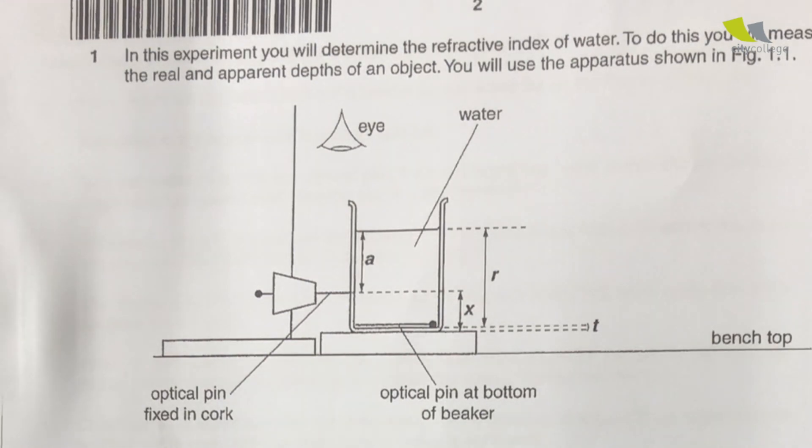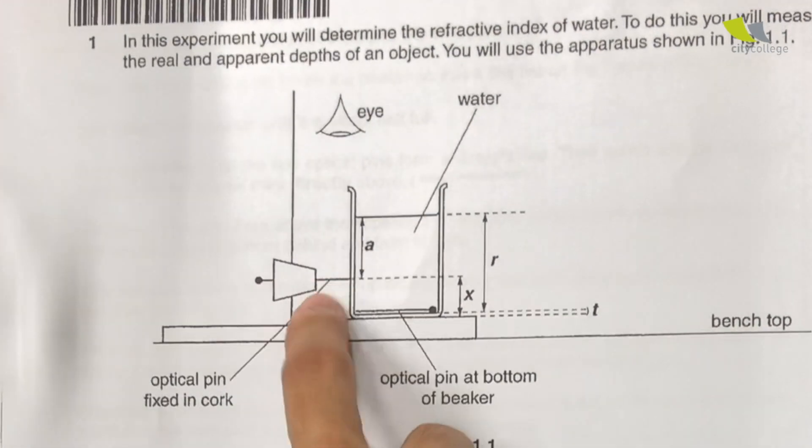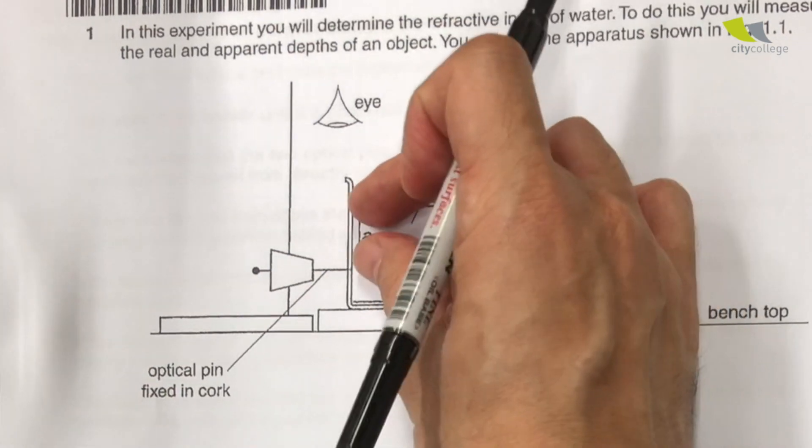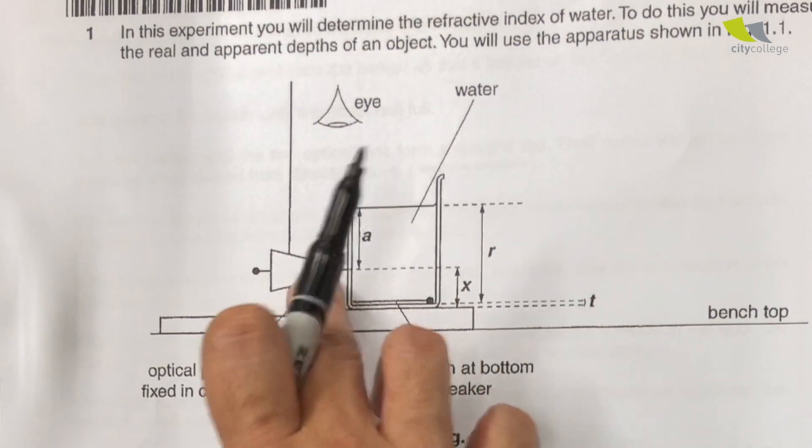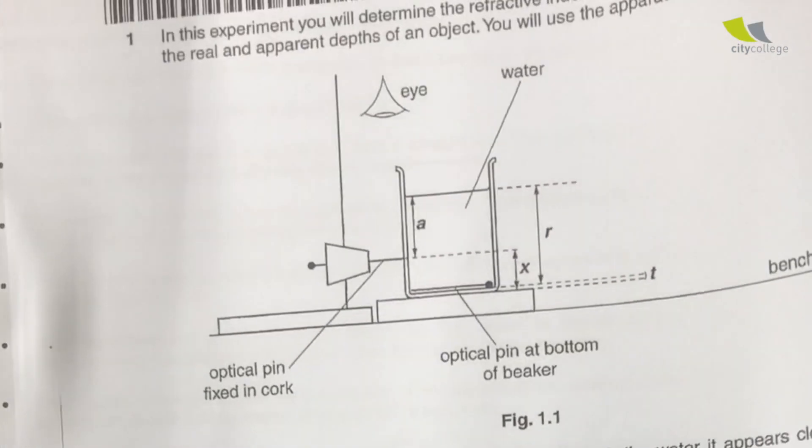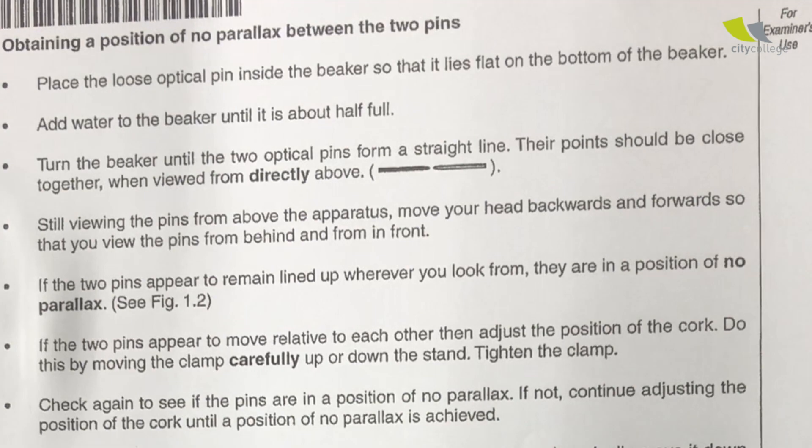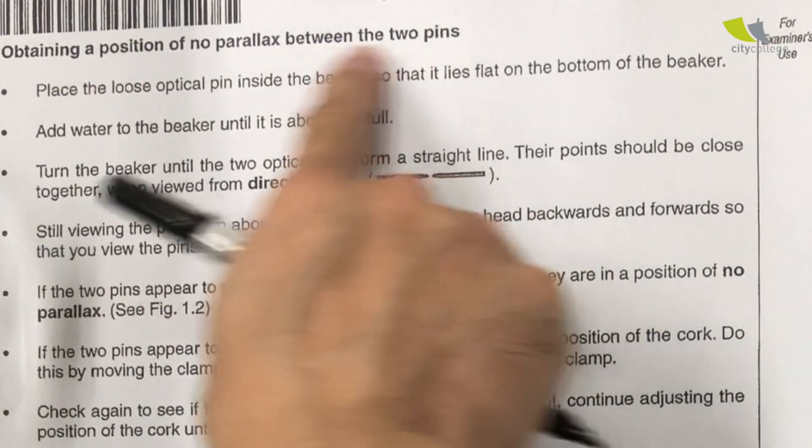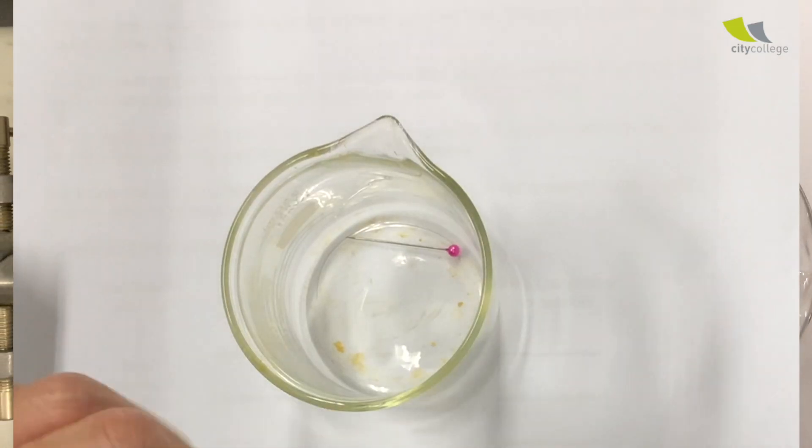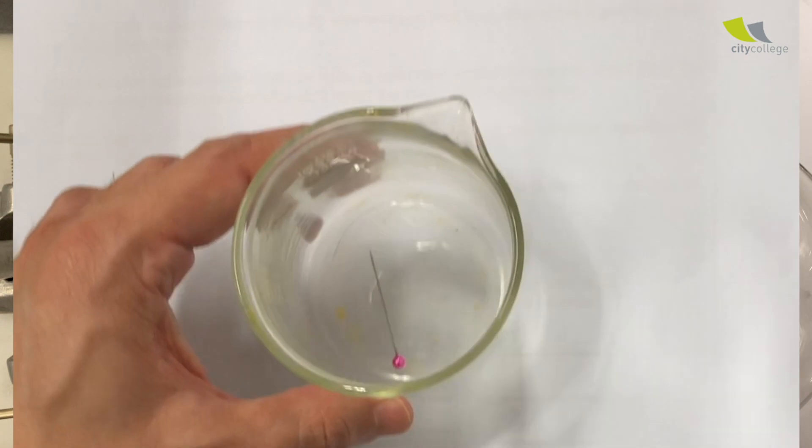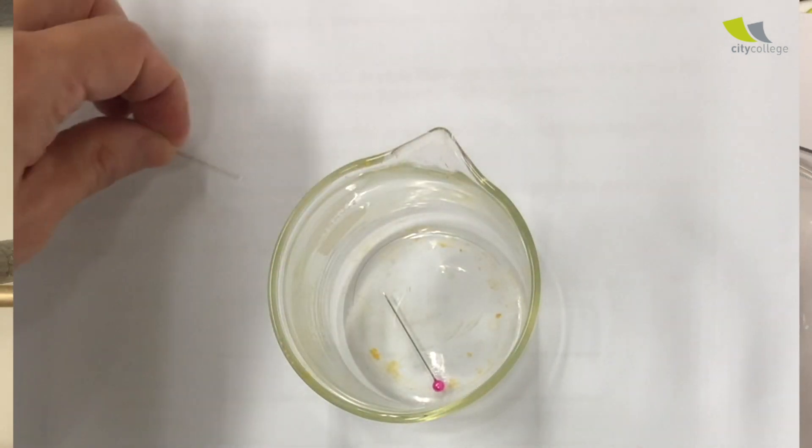So first of all, this pin over here, this is the apparent depth, this is actually the real depth. So how do we know where should be the position of this pin? This is where they introduce this concept where you move your head and then you check the position of no parallax between the pins. So let me just explain this to you. Later on, we are going to have a beaker with water with the pin inside, you can see like that. Then the optical pin is outside. So I'm going to represent this in a diagram.